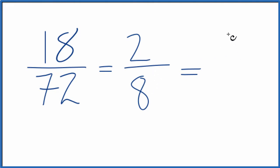2 divided by 2 is 1, and 8 divided by 2, that's 4. So we've simplified the fraction 18 over 72 down to 1 over 4. If you knew that 18 went into 72 four times, you could have skipped this step right here.